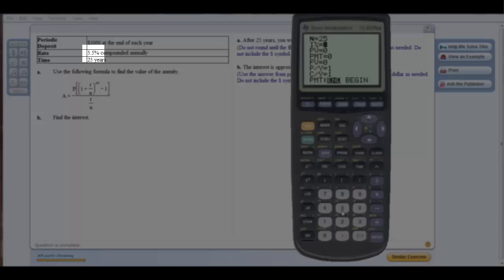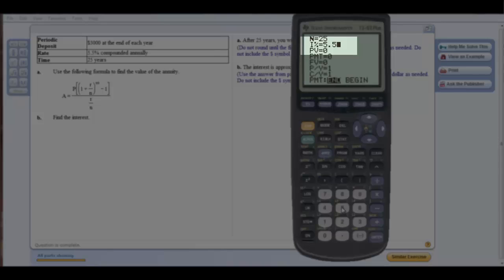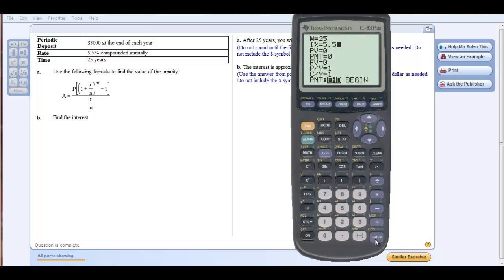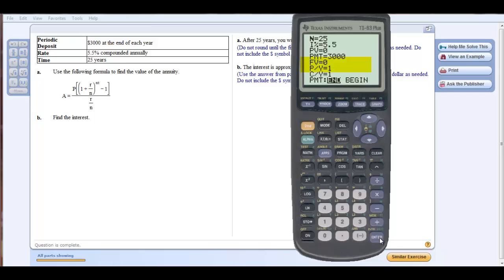My interest rate is 5.5%. Notice I'm using this in percent form and not decimal form, which is what I usually use when I'm using my formulas. I'm not concerned about present value for this problem. For the payment, I'm depositing $3,000 per year. My future value is what I want to find, so I'm going to leave that blank for right now.